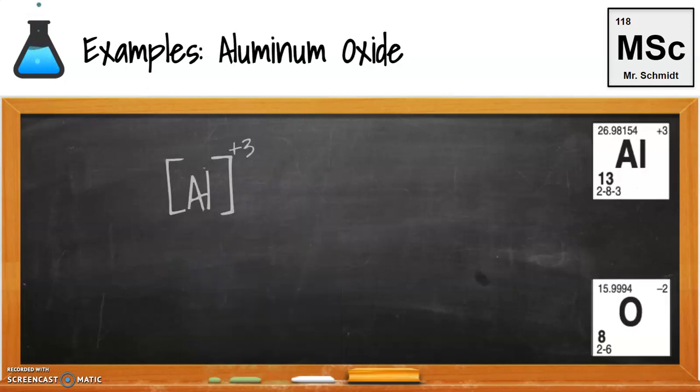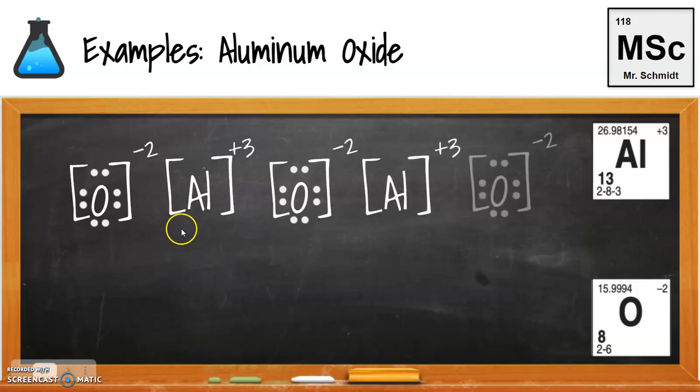Aluminum oxide. So aluminum forms a plus three charge. Oxide forms a negative two charge, okay? So when we do that, again, we have to show the dots to show, indicate that it's a negative, right?